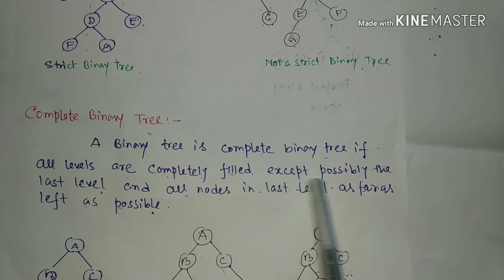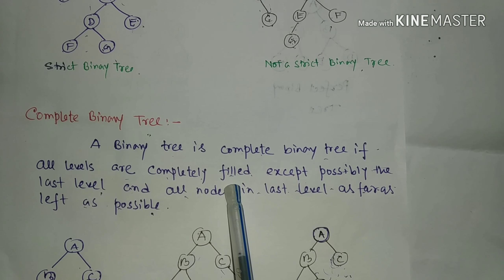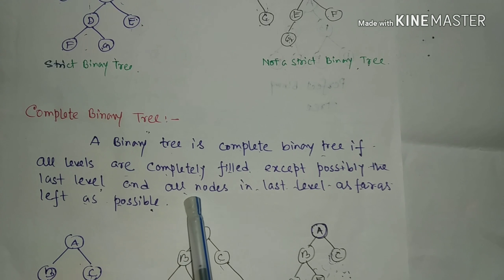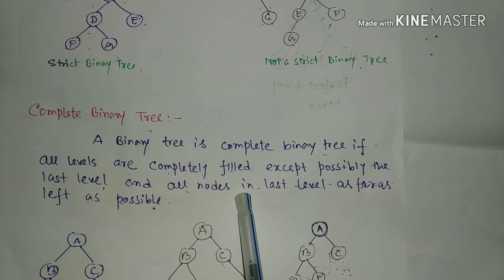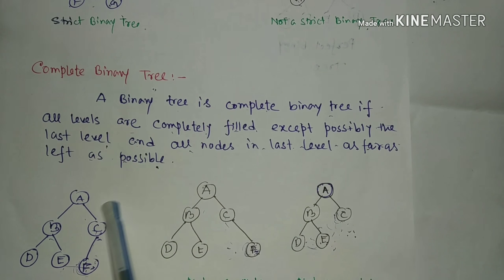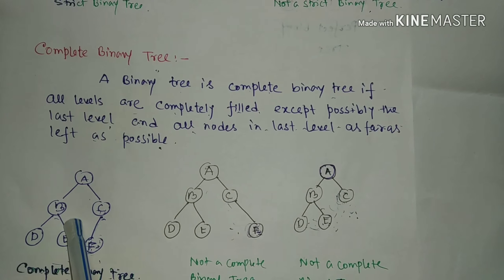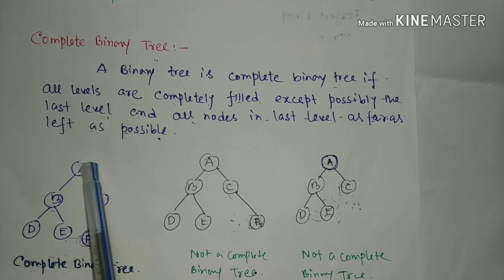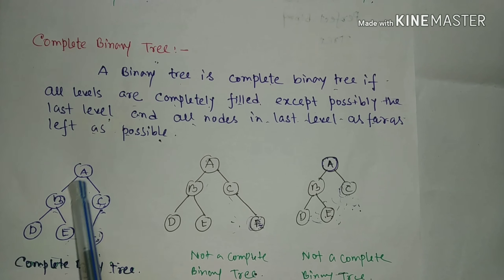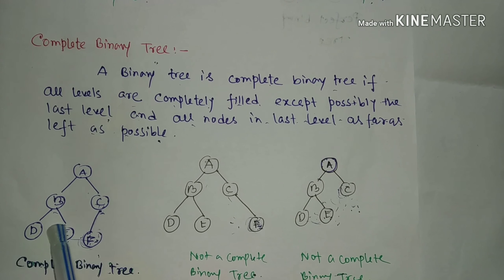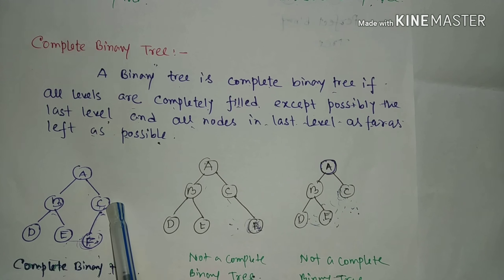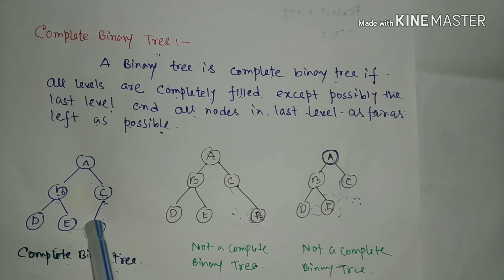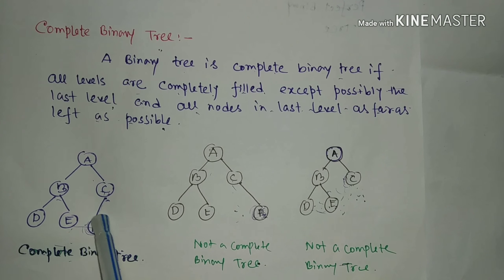Now, complete binary tree. A binary tree is a complete binary tree if all levels are completely filled except possibly the last level, and all nodes in the last level are as far left as possible. In this tree, it is a complete binary tree because all the levels are completely filled, but the last level is not completely filled — however, the nodes in the last level are as far left as possible.